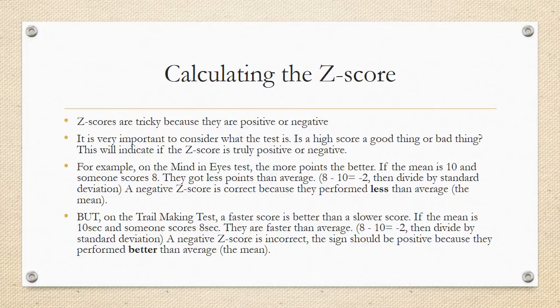However, on the trail making test, a faster score is better than a lower score. If the mean is 10 seconds and someone scores 8 seconds, they are faster than average. Again, doing the math, 8 minus 10 is negative 2. Then you would divide by the standard deviation. A negative z-score is incorrect. The sign should be positive because they performed better than average.